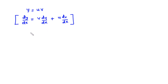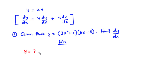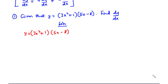Let's pick an example to explain how to find the derivative of a function using the product rule. For the first example, given that y equals (3x² + 1)(5x - 8), find dy/dx. We let u equal 3x² + 1 and let v equal 5x - 8.